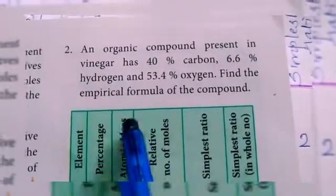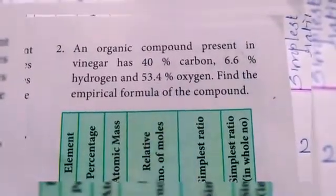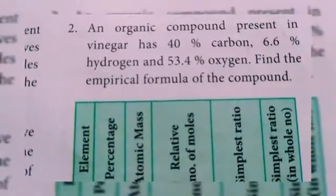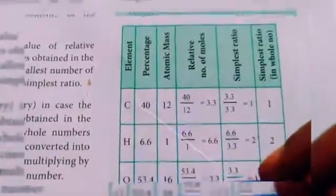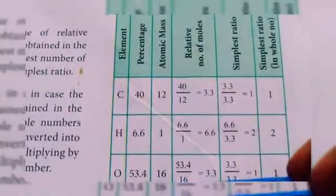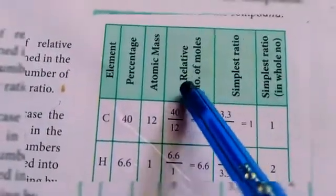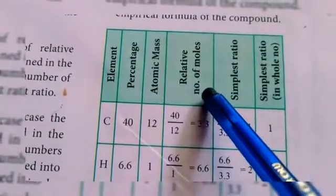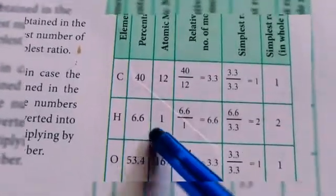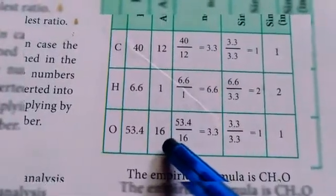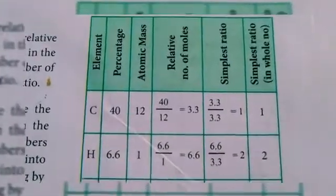In the book there is one more example. An organic compound contains 40% carbon, 6.6% hydrogen, and 53.4% oxygen. Find the empirical formula of the compound. If we total all percentages we get 100. Following the same steps — elements are carbon, hydrogen, oxygen; percentages are 40, 6.6, and 53.4; atomic masses are 12, 1, and 16. Dividing: 40÷12 = 3.3, 6.6÷1 = 6.6, 53.4÷16 = 3.34.